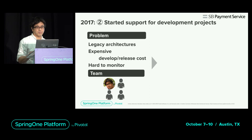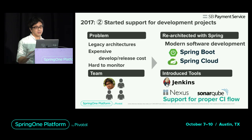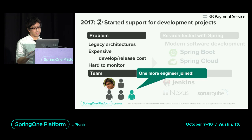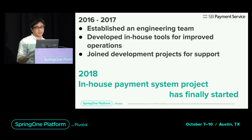At this time, Jenkins, Nexus, and SonarQube were introduced to help the development process run smoothly through CI. Another engineer joined us and we became a team of five people. So what we did in 2016 to 2017 was create an engineering team, create some in-house tools, and develop a project supporting operational improvements.